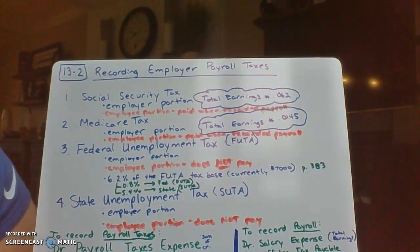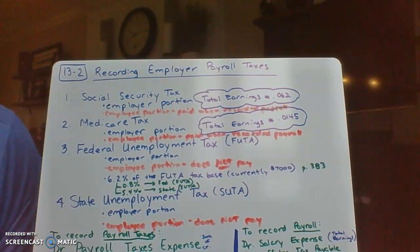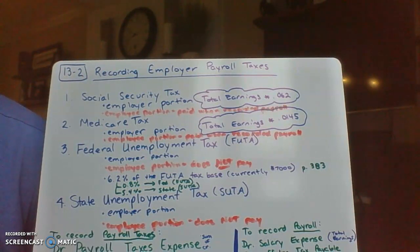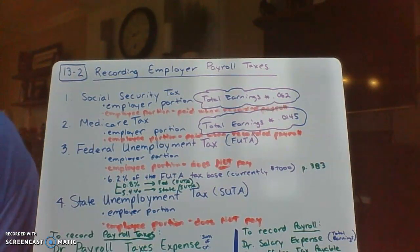The employer's FUTA tax is computed by taking 6.2% of the FUTA tax base, which is currently $7,000. That means the employer pays unemployment taxes at 6.2% of each employee's earnings until that employee hits $7,000. Once an employee reaches $7,000, the employer stops paying unemployment taxes for that employee. So 6.2% applies up to the $7,000 tax base.